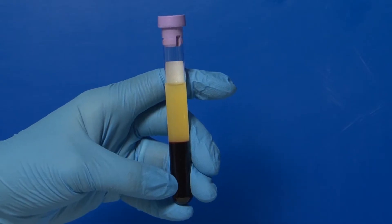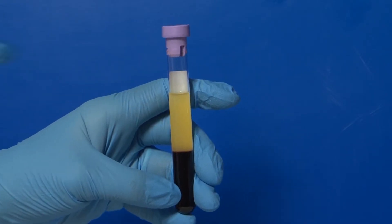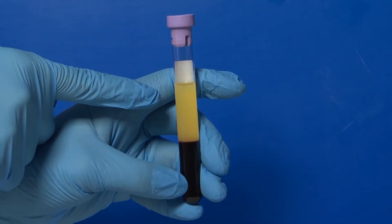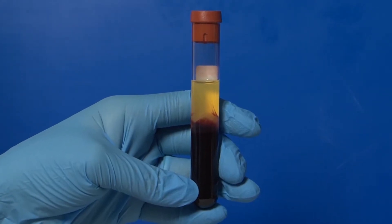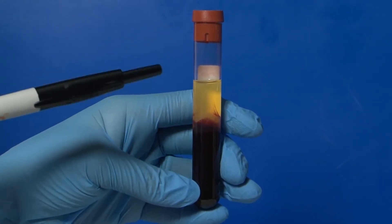Plasma can be obtained from the lavender top tubes, which contain EDTA as an anticoagulant. Serum can be obtained from the red top tubes, which do not contain any anticoagulant.